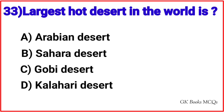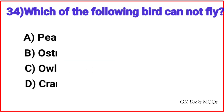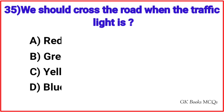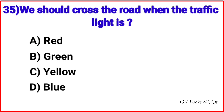Question 33: Largest hot desert in the world is? Correct answer is option B, Sahara Desert. Question 34: Which of the following bird cannot fly? Correct answer is option B, Ostrich. Question 35: We should cross the road when the traffic light is? Correct answer is option A, Red.